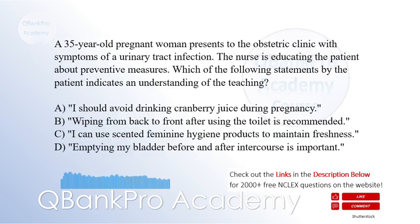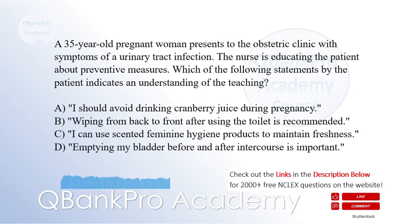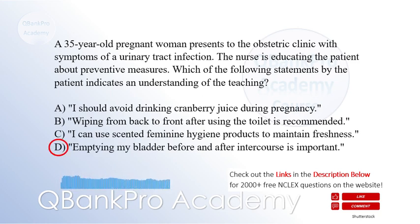A 35-year-old pregnant woman presents to the obstetric clinic with symptoms of a urinary tract infection. The nurse is educating the patient about preventive measures. Which of the following statements by the patient indicates an understanding of the teaching? A. I should avoid drinking cranberry juice during pregnancy. B. Wiping from back to front after using the toilet is recommended. C. I can use scented feminine hygiene products to maintain freshness. D. Emptying my bladder before and after sexual intercourse is important. The correct answer is D, emptying my bladder before and after intercourse is important.